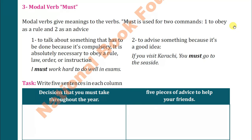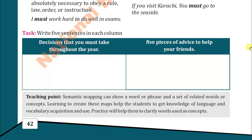For example: 'I must work hard to do well in exams.' Number two, to advise something because it is a good idea — for example: 'If you visit Karachi, you must go to the seaside.' These are the two important functions of the modal verb 'must.' There are other functions also, but they are not discussed in your book. Concentrate only on these two main functions. Now write five sentences in each column. You can do this task in your book, not in your copies.